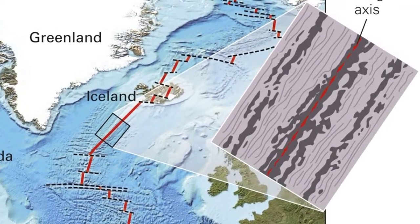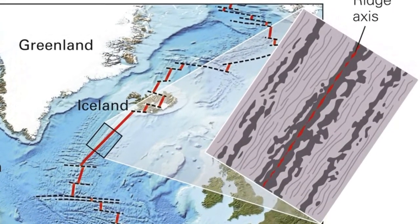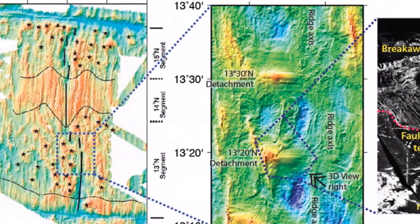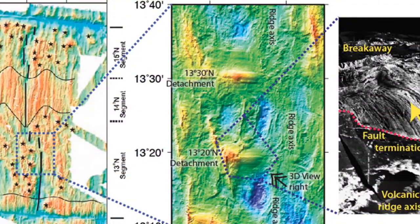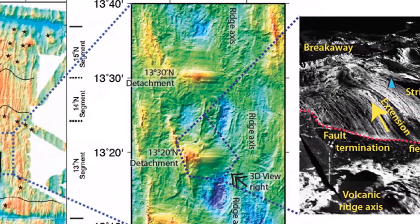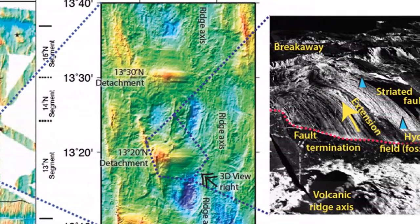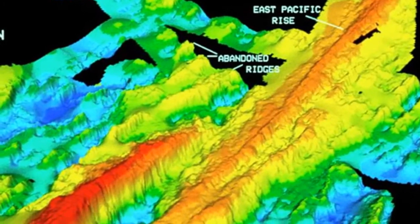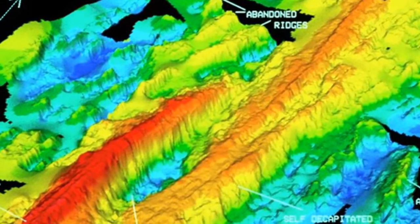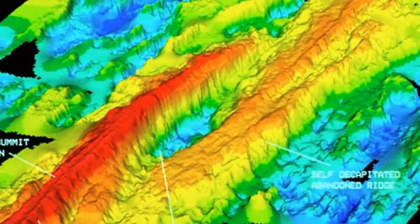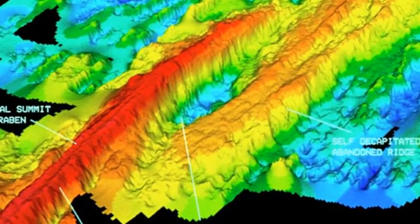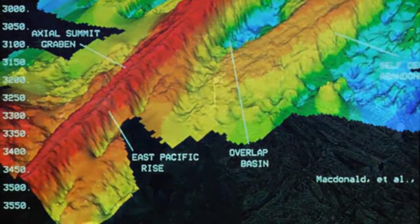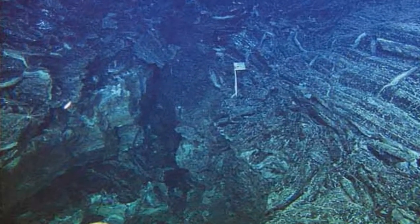Oceanic ridges are as high as some mountains found on the continents. However, the similarity ends there. Whereas most continental mountains form when compressional forces fold and metamorphose thick sequences of sedimentary rocks along convergent plate boundaries, oceanic ridges form where tensional forces fracture and pull the ocean crust apart. The oceanic ridge consists of layers and piles of newly formed mafic rocks that have been faulted into elongated blocks that are buoyantly uplifted.